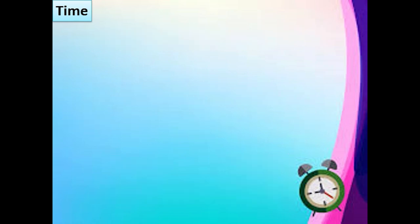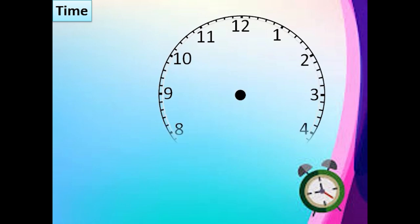Let us know more about a clock. A clock can be round in shape or square in shape. There are 12 numbers, 1 to 12 marked round the clock. Between each number there are 5 divisions marked. So there are 60 divisions marked on a clock.